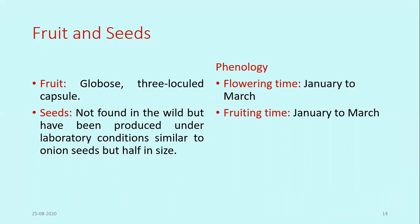Seeds are not found in the wild variety, but may be produced under laboratory conditions, similar to onion seeds but half the size. Regarding phenology, the flowering time is January to March, and the fruiting time is also January to March.